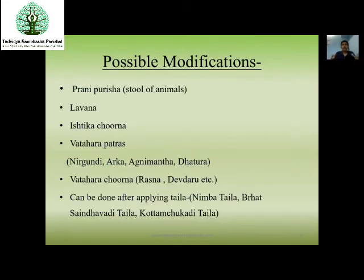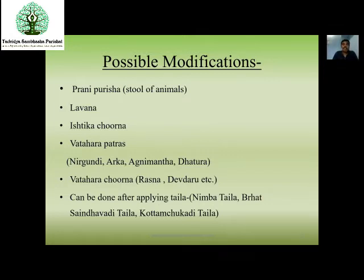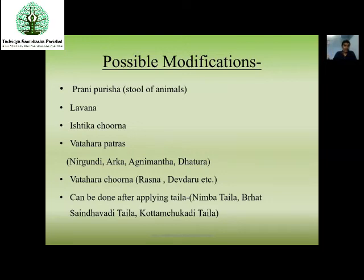Coming to possible modifications: if Varluka sand is not available — because recent days the sand supply has restrictions from the government — in that case what we can do is use Prani Purusha, that is cow dung or horse dung. We can consider Karisha Pinda Sveda also, or use Prani Purusha in place of sand. Otherwise, we can use Lavana or Ishtika Churna.